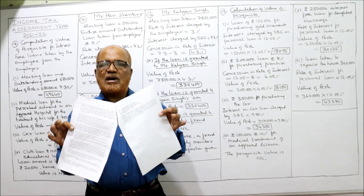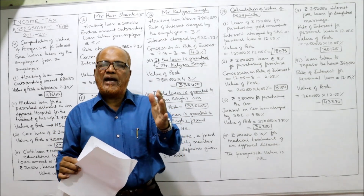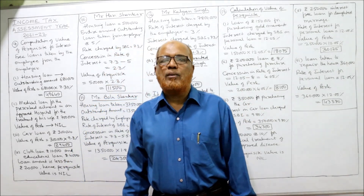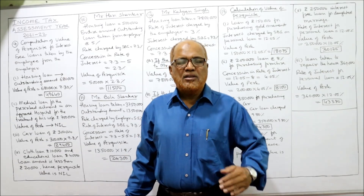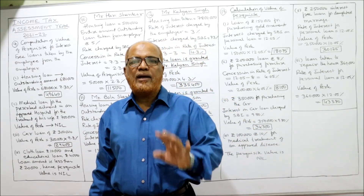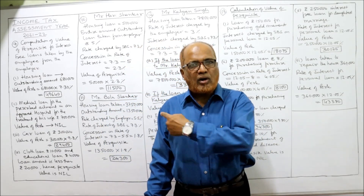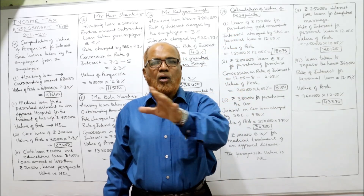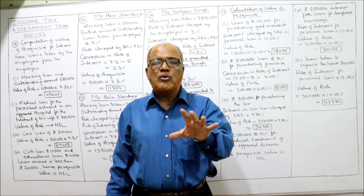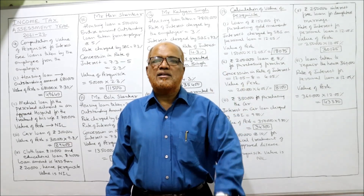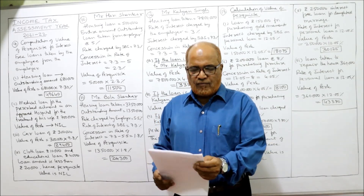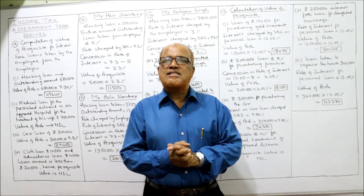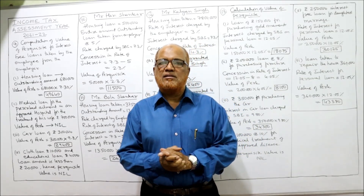All the problems in the worksheet are now completed. Up to Problem 8 were on rent-free accommodation (RFA), and from Problem 9 to 13 all are on interest-free loans. These are short problems to make you acquainted with the provisions of the IT Act on perquisites. Later, while doing the main problems on income from salary, all these points will arise, so you should be in a position to decide how much to calculate as the value of the perquisite. In the next video we will continue with the next topic: perquisites taxable in specified cases.